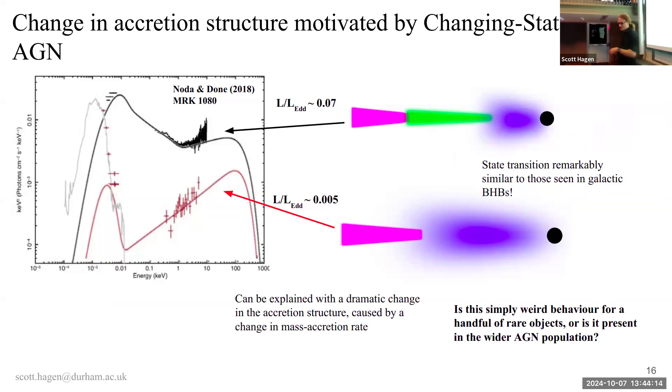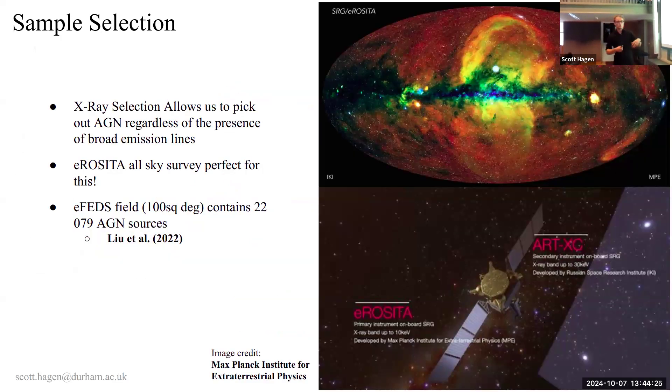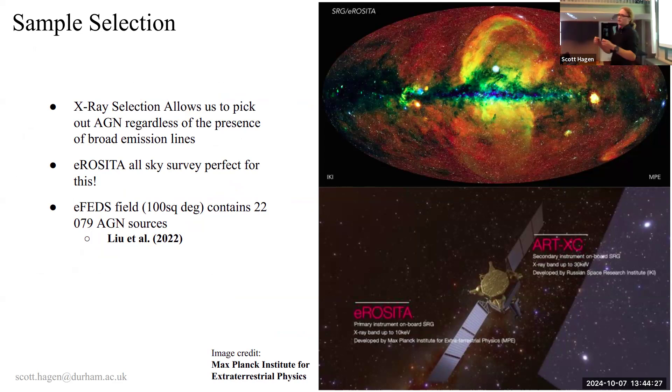And so, one way of explaining this is a state transition, where you go from a disk-dominated state at high accretion rates, to one dominated by X-ray plasma at low accretion rates. Similar to some state transitions you can see in local black hole binaries. And so, the question then is, is this a rare behavior for these funky objects, or is it actually present in the wider AGN population? And so, with that, we need a sample. And we go to the X-rays, because now we don't want to select based on broad lines, or blue optical continuum. We want to select regardless.